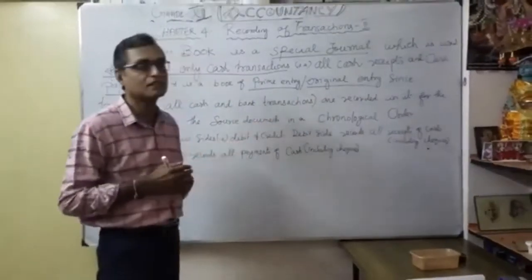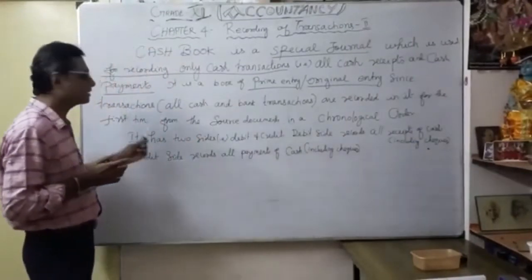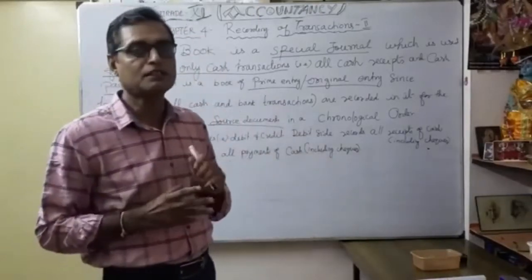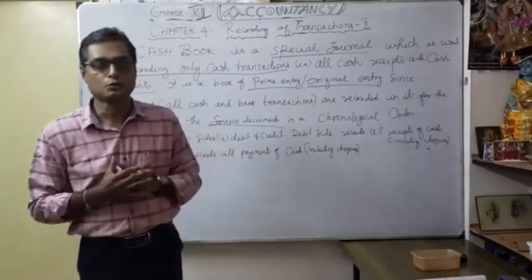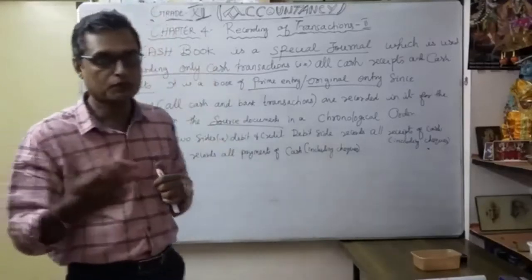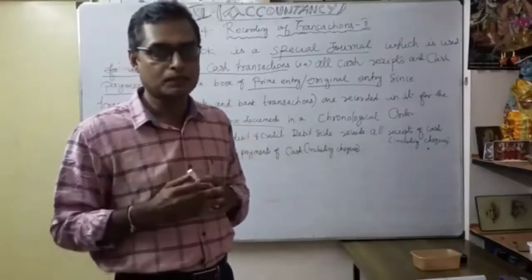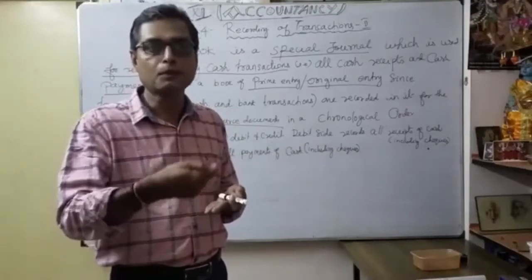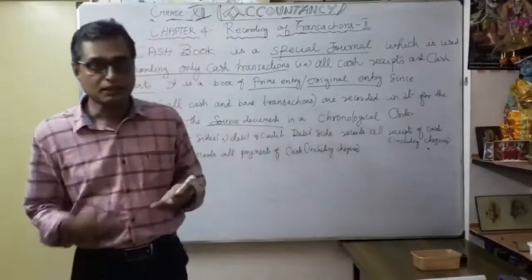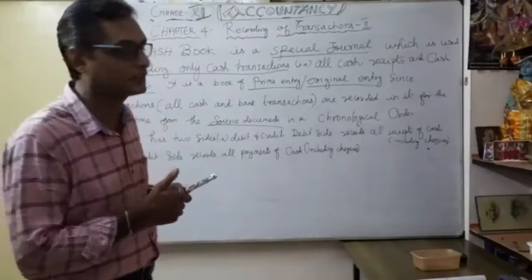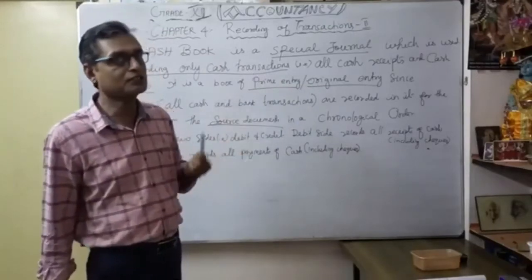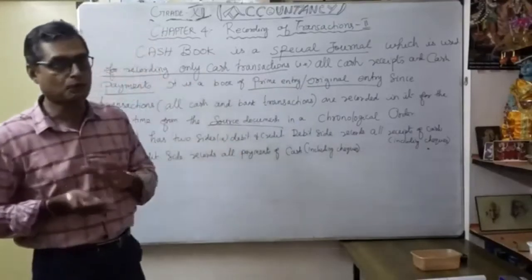From the source documents — which you already know: different source documents like cash memo, invoice bill — you go to market, you purchase anything, you get a cash bill. From that cash bill, you prepare a voucher; that is called the source document. Once you prepare the voucher, you go to make journal entries. If the transaction is connected to cash, you maintain the cash book on a monthly basis.